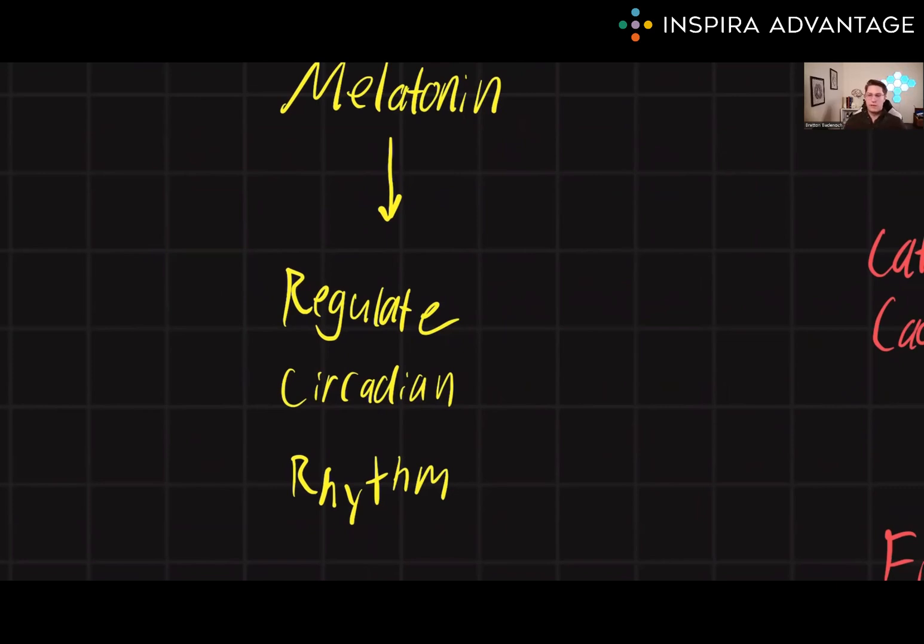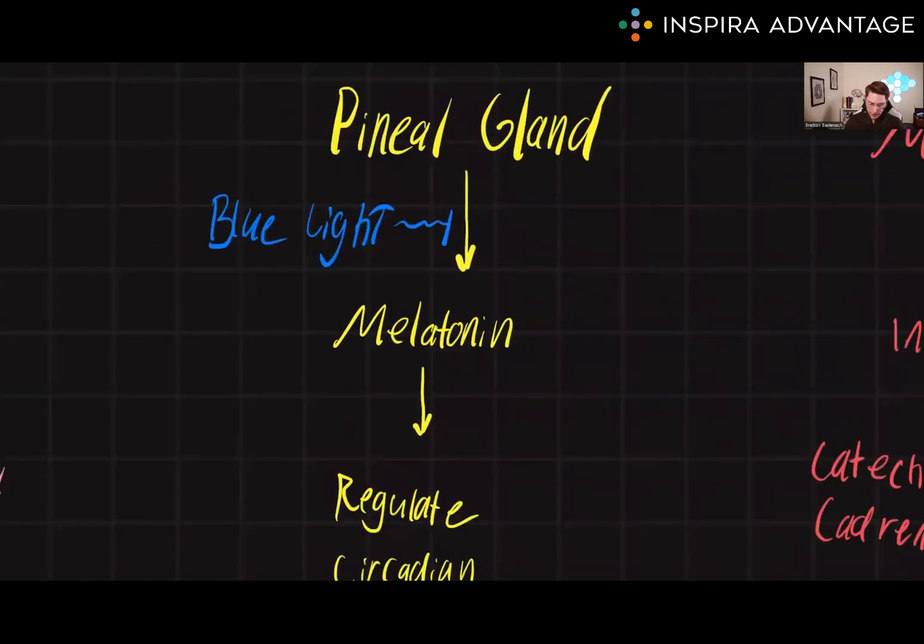Melatonin increases its level in the evening and decreases it in the morning. This helps the body prepare for sleep and wake up feeling refreshed. The pineal gland also plays a role in regulating the onset of puberty by secreting melatonin in response to changes in light exposure.